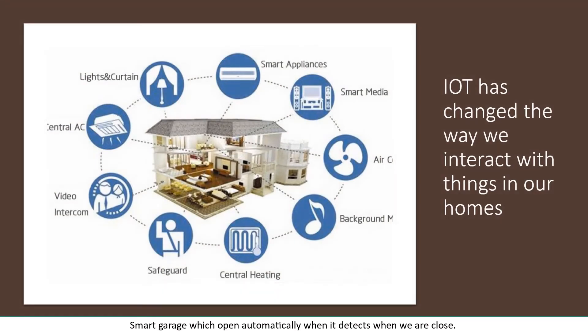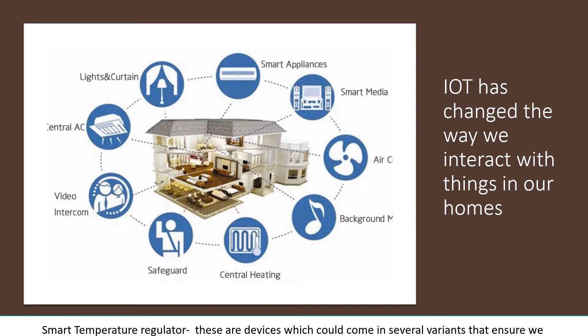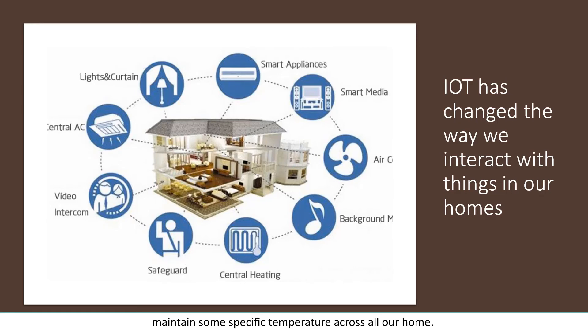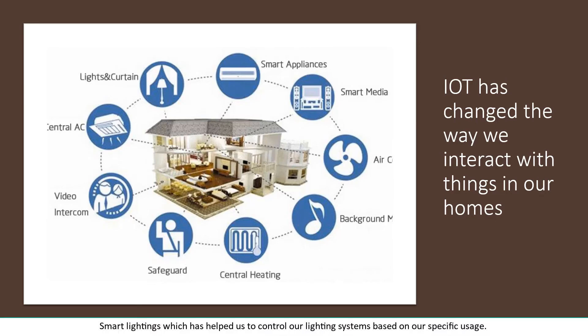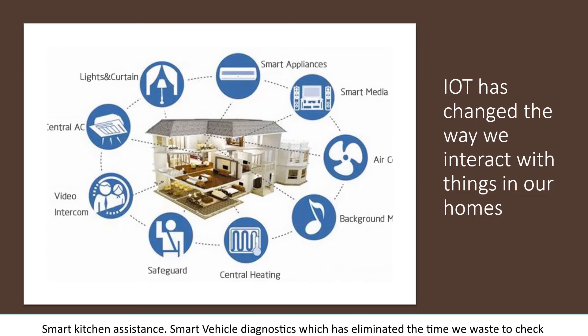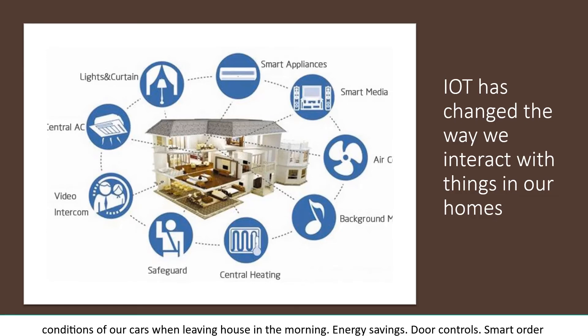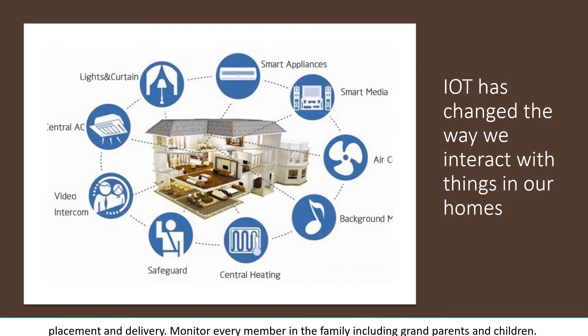Some examples of activities that IoT has changed: Smart Garage, which opens automatically when it detects you are close. Smart Temperature Regulator, devices that ensure we maintain a specific temperature across our home. Smart Lightings, which let us control our lighting systems based on specific usage. Smart Kitchen Assistance, Smart Vehicle Diagnostics — which has eliminated the time we waste checking conditions of our cars in the morning — Energy Savings, Door Controls, Smart Order Placement and Delivery Monitoring, monitoring every member of the family including grandparents and children, and Smart Home Security.